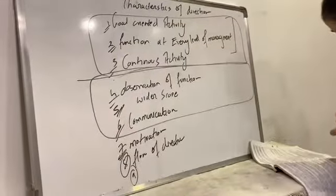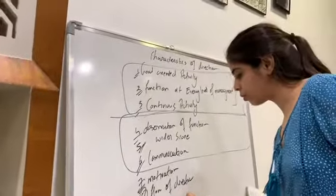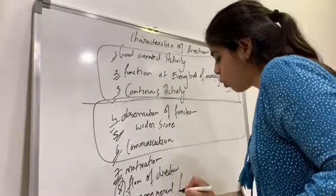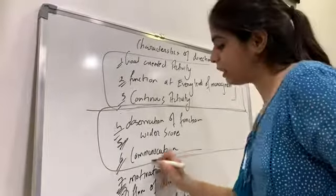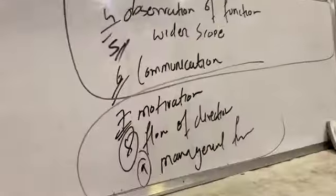The ninth and last characteristic is that direction is a managerial function. Planning, organizing, directing, staffing — these are all management functions, and so directing is also a managerial function. So in summary, the last three characteristics are: motivation, flow of direction is downward, and it is a managerial function.